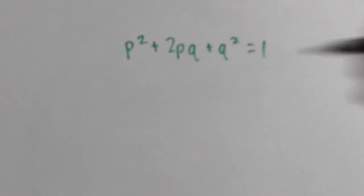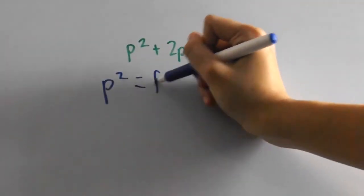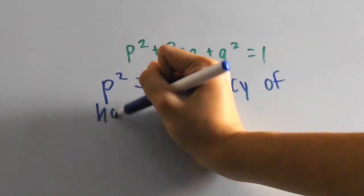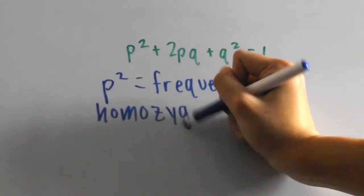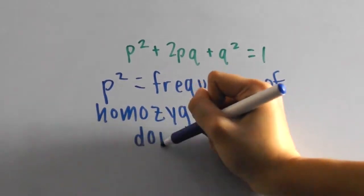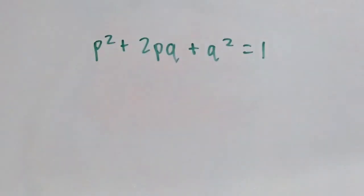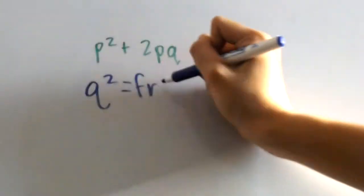Going back to what I said earlier, p squared stands for the frequency of those who are homozygous for the dominant allele. So in this case, it would be people with two brown eyed alleles. That's why it's p squared, they have two of the same thing. It's the same for q squared, they have two recessive alleles.